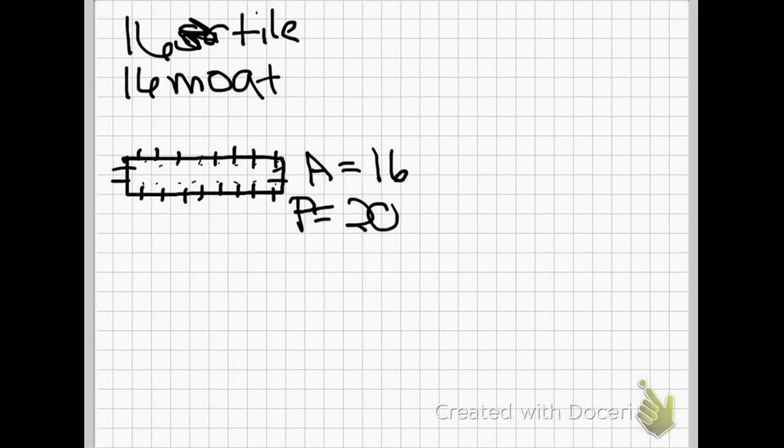And you have to put your moat all the way around because that keeps the bad guys out. And if you have one spot where there's no moat, it's not going to work. So let's try to make a rectangle of a different shape.